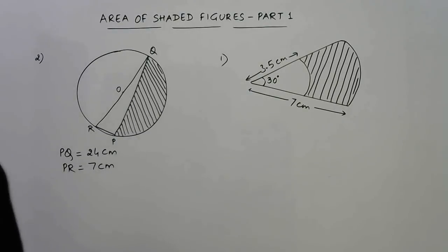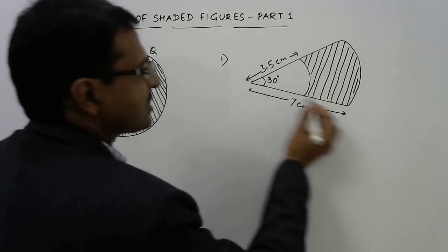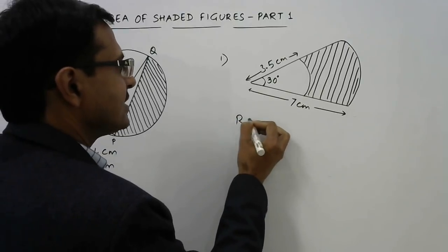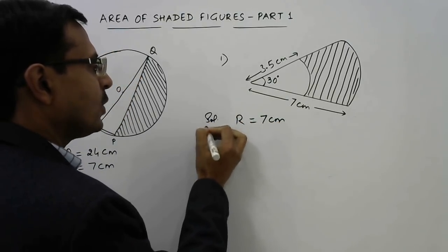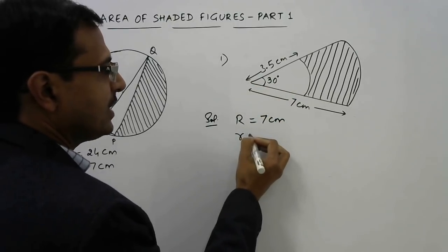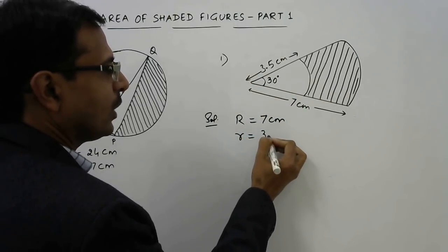Let us solve the first problem first. This is a question of area of sector, so we will be using the formula for finding the area of sector. The larger sector has radius 7 cm, so I will call this capital R, and the smaller sector has radius 3.5 cm, so I will call it small r.